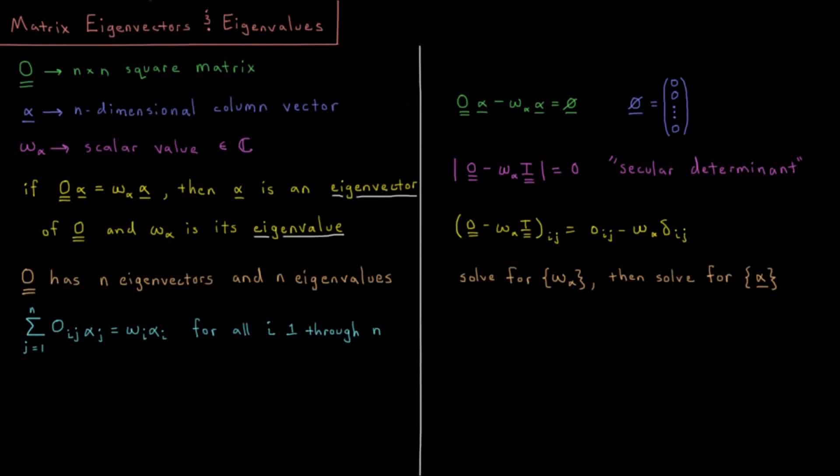This video will discuss the eigenvectors and eigenvalues of matrices. Let's assume we have some matrix O. O is going to be an n by n square matrix.